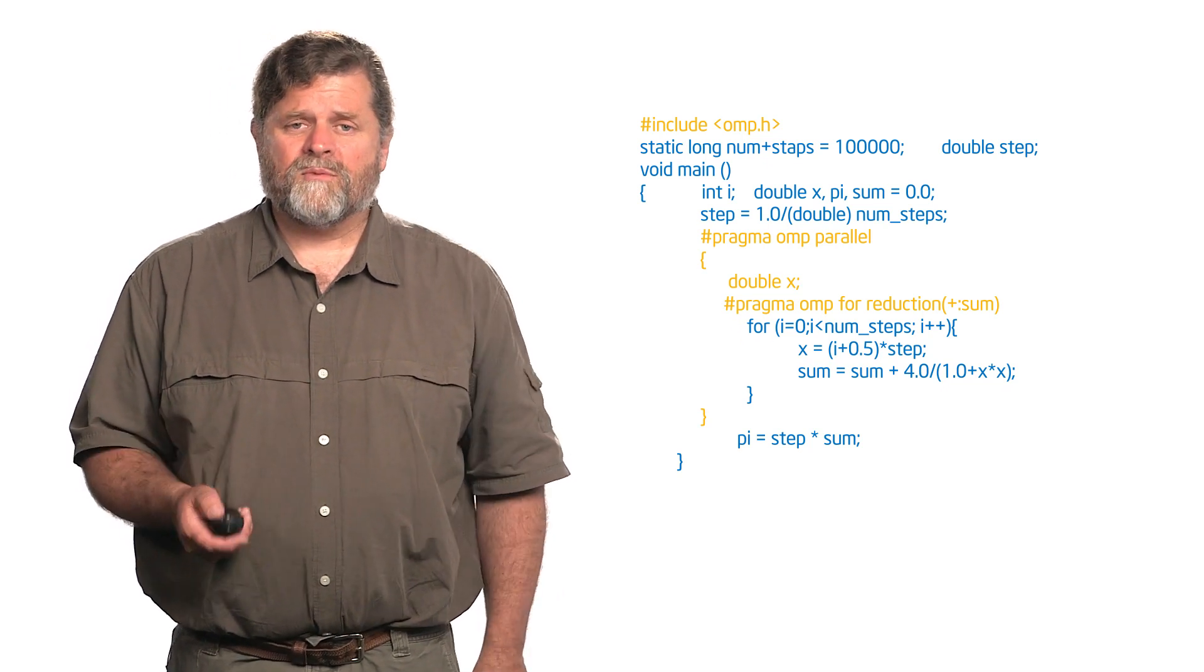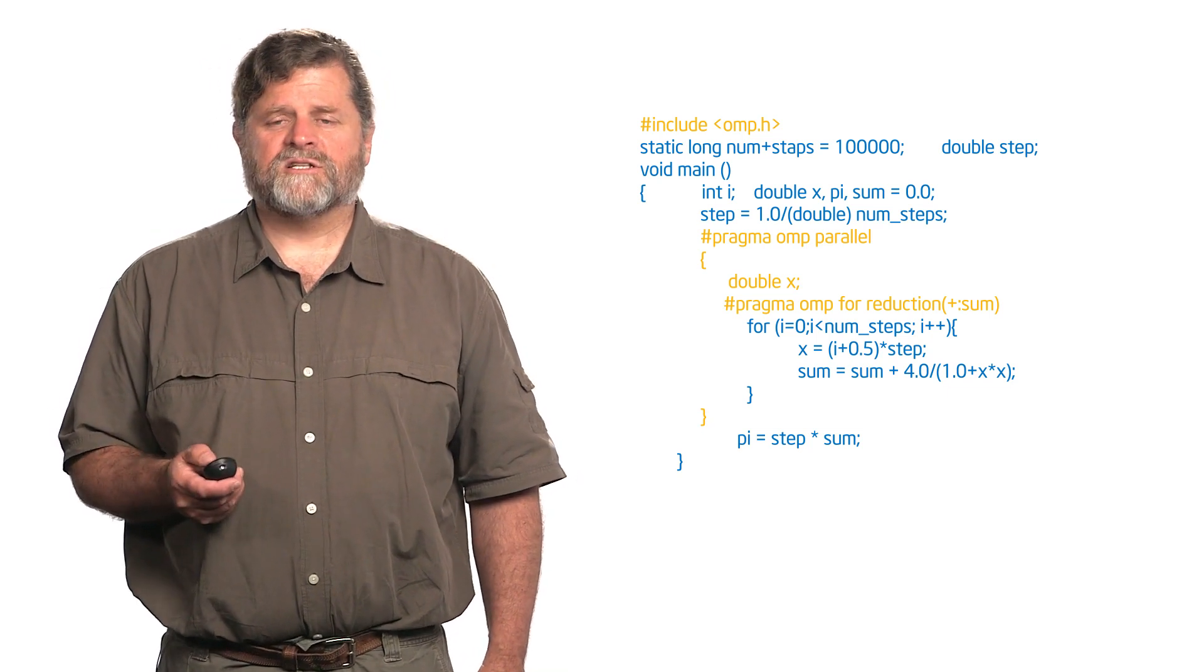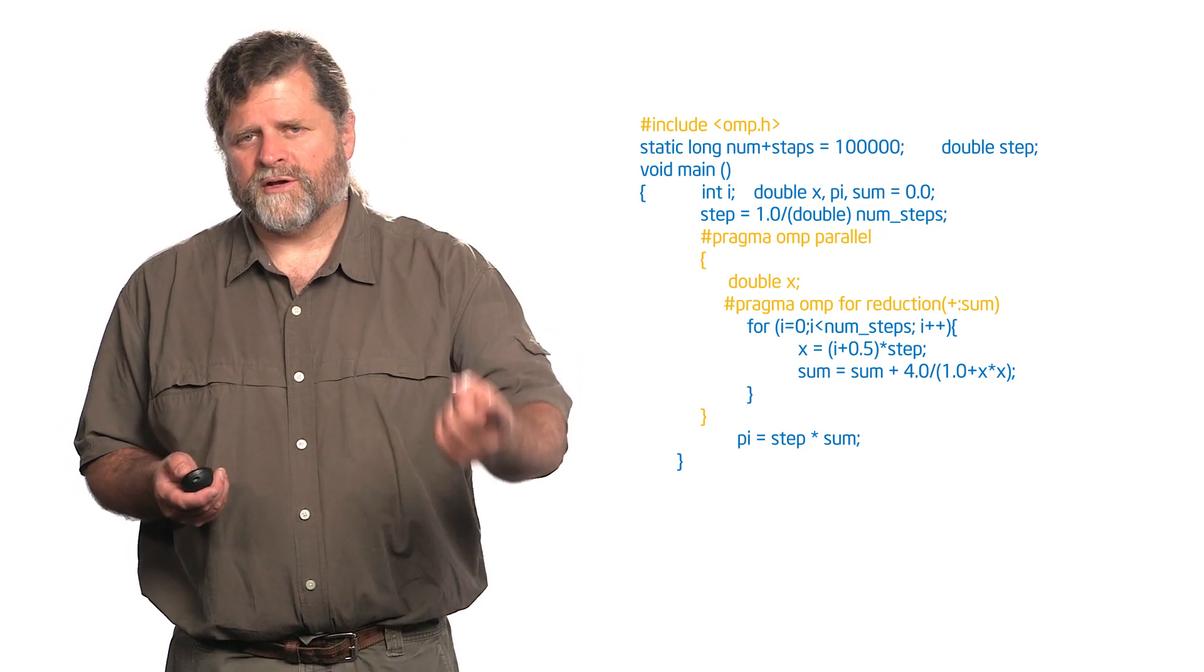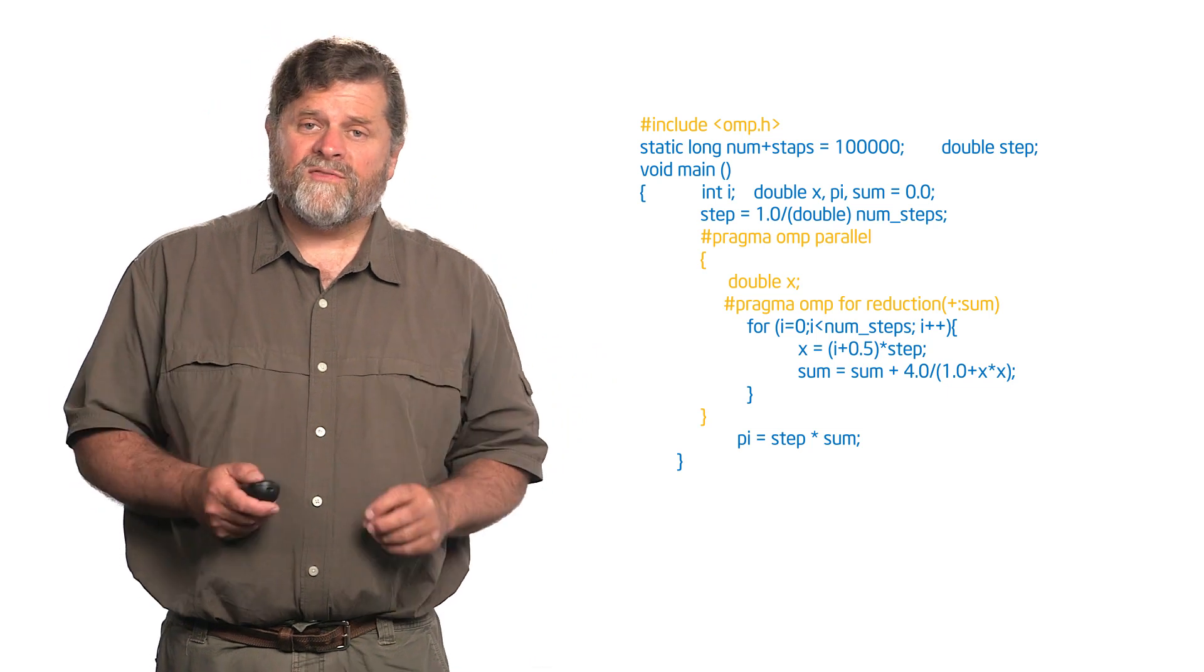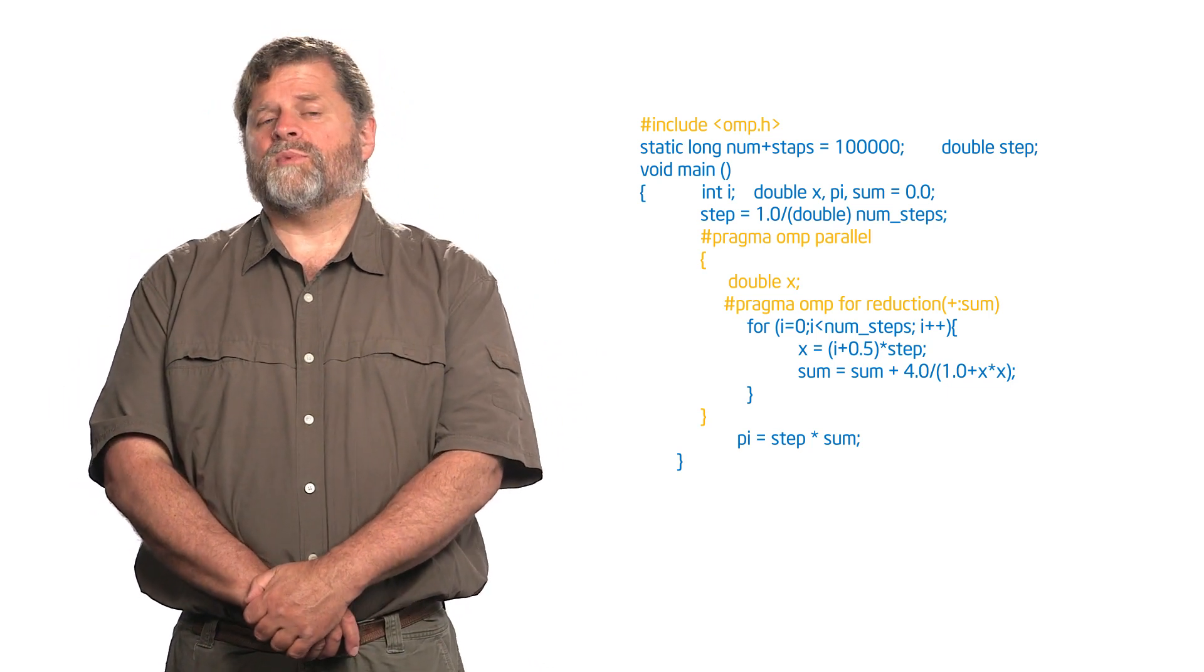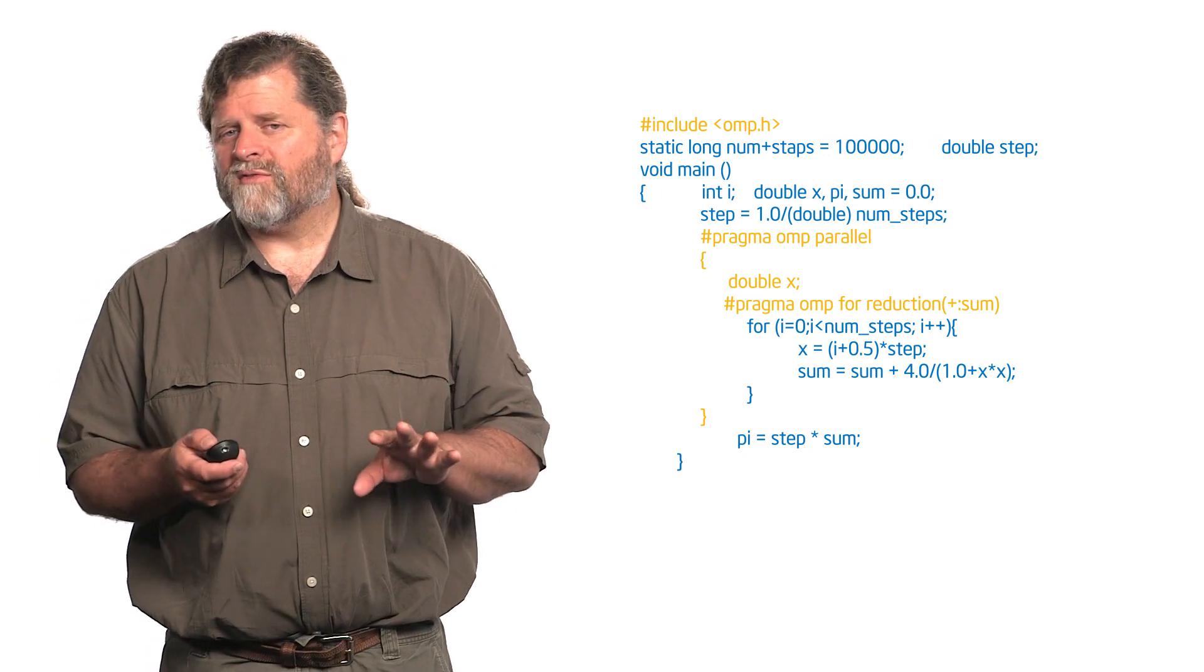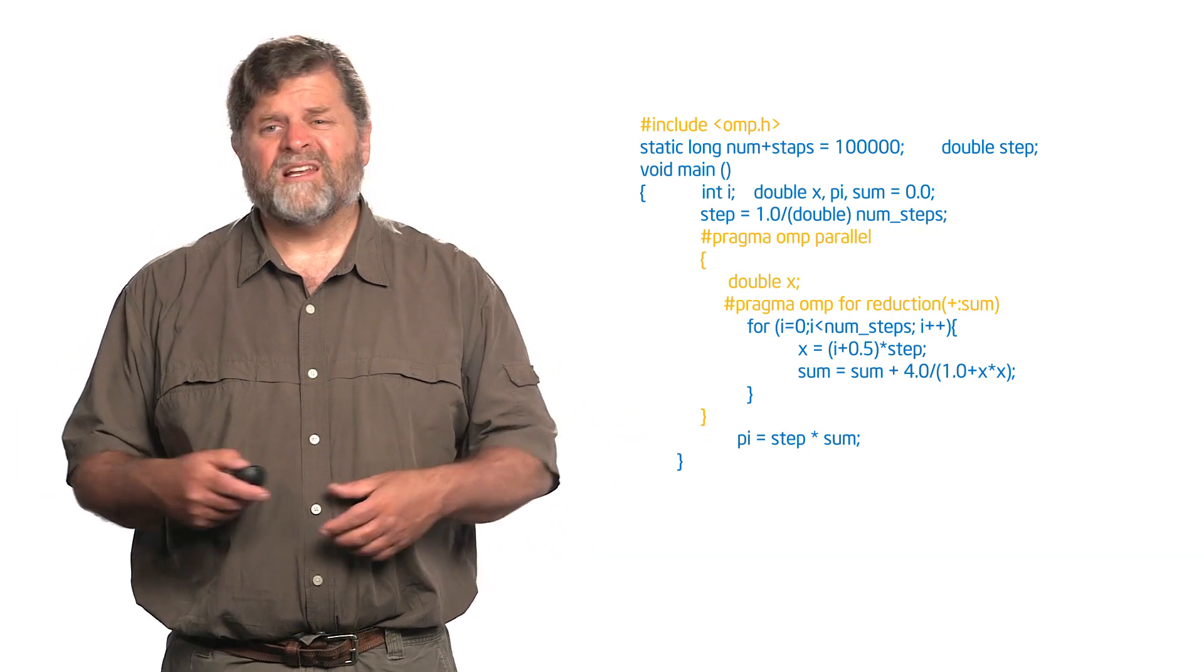Then I do pragma OMP for with the reduction clause. And that reduction is going to be over the plus and then the colon sum to say that the operator's plus and the variable is sum. Now, I'm using the fact that by default, the loop index variable I will be local to each thread. So notice I didn't have to create a copy of I for each thread. But if you did, that's perfectly okay. But you didn't need to.